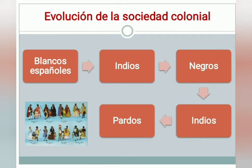Dentro de ellos podemos destacar los principales: los blancos españoles que formaban el grupo conquistador, igualados todos entre sí por las leyes dictadas a su favor. También se encuentran los indios, que eran grupos sometidos, sujetos a la condición de manos de obra explotadas por los blancos. Otros eran los negros, quienes todavía eran poco numerosos y traídos de África como esclavos.